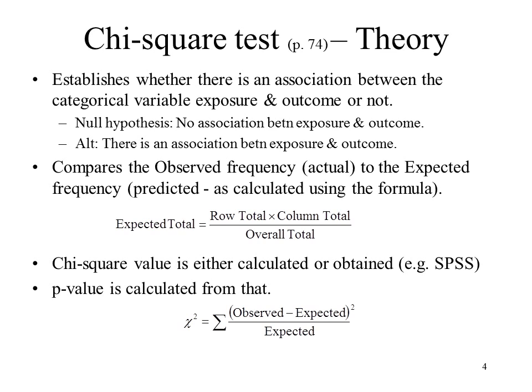The null hypothesis is that there's no association between the exposure and the outcome — in this case, no association between living in the country and having a breast reconstruction. The alternative hypothesis is that there is an association between the outcome and exposure, so there is an association between your location of residence (metro or country) and the outcome of breast reconstruction.